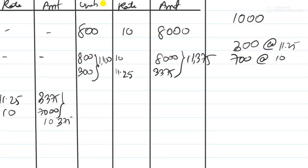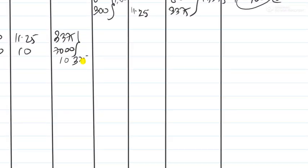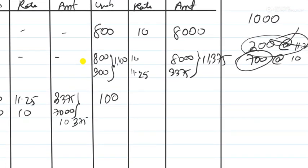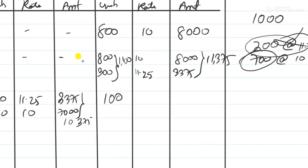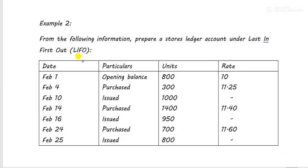After the Feb 10 issue, the 300 units purchased on Feb 4 are fully exhausted. Out of the 800 opening units, 700 were issued, so 100 units at 10 rupees remain, with an amount of 1000.